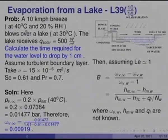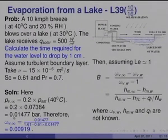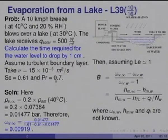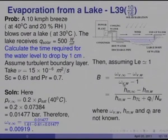At 40°C and 20% RH: P_V_infinity = 0.2 × 0.07384 = 0.01477 bar, giving omega_V_infinity = 0.00919. Taking Lewis number ≈ 1, and assuming small B, the energy-mass balance gives: (omega_V_infinity − omega_V_w) / (omega_V_w − 1) = (H_m_infinity − H_m_w) / (H_m_w − H_TL + Q_L/n_w).